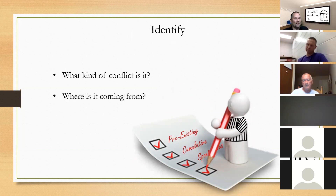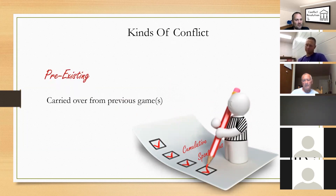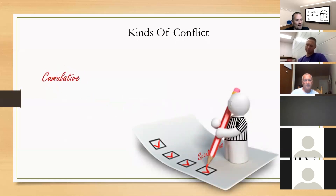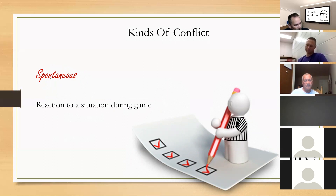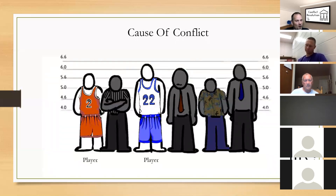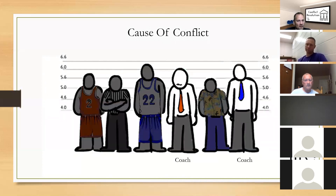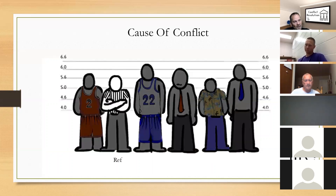There are three kinds of conflict in basketball. Pre-existing — that's something they brought with them. Cumulative — something that happens over the course of the game and builds up over time. And spontaneous — where it comes out of nowhere. We also have to know who causes the conflict: is it from the players, the coaches, a fan, or a fellow official?